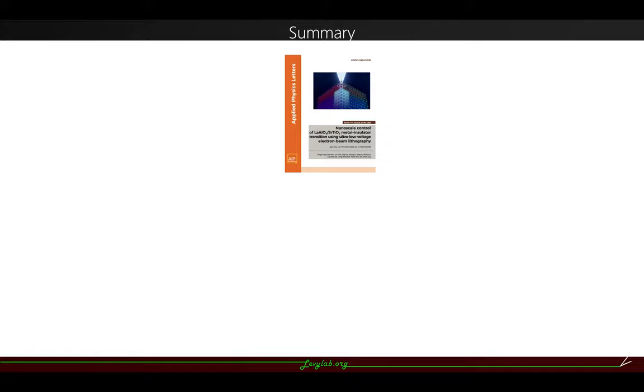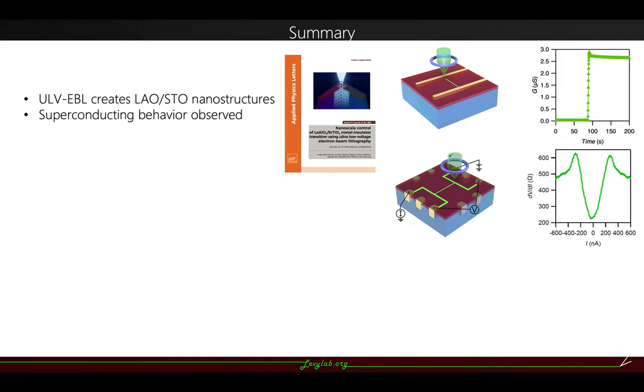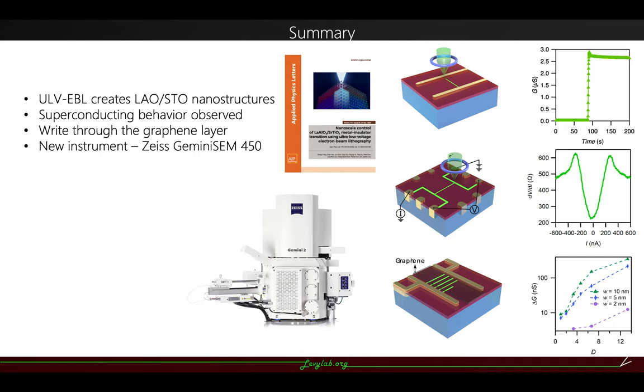Here is my summary. I showed that ultra-low-voltage e-beam lithography can create nanostructures at the LAO-STO interface, and it has the superconducting behavior. We can write through the graphene layer and boron nitride graphene piece,